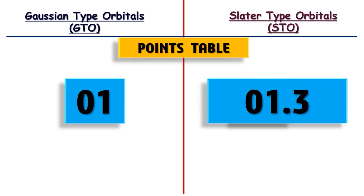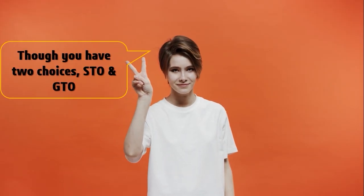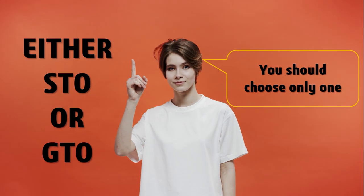So both the STOs and the GTOs stand on somewhat equal footing now, though STO is quietly getting a little advantage. One important thing to remember: we may use one or the other of these functions as the basis functions, but we never ever will mix basis function types. I hope up to this point everything has been clear.